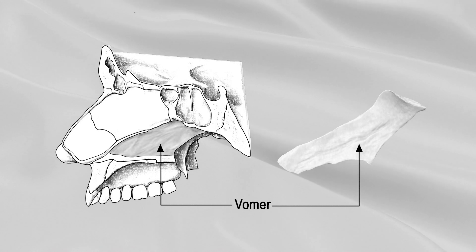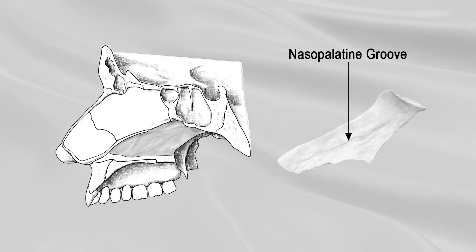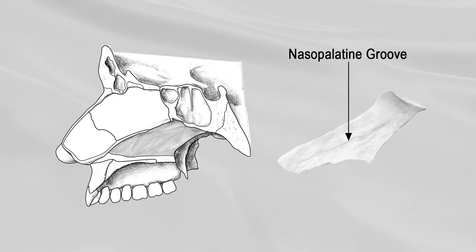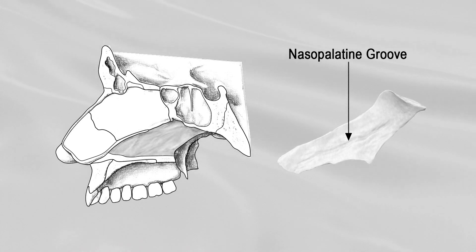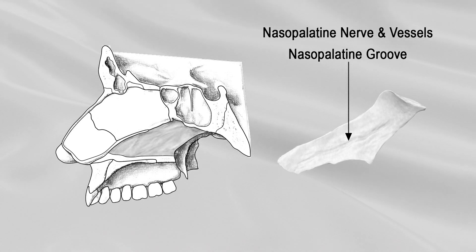Right and left surfaces are marked by nasopalatine grooves. Each groove runs obliquely downward and forward and lodges the nasopalatine nerve and vessels.